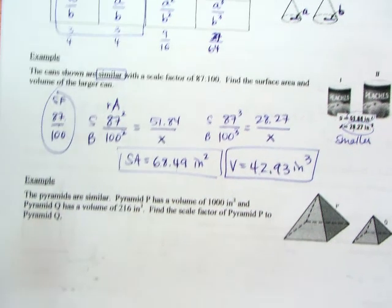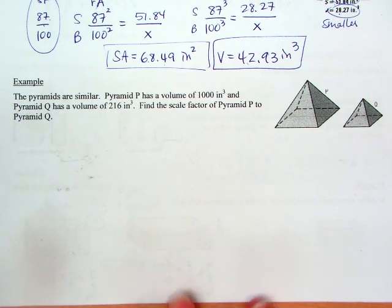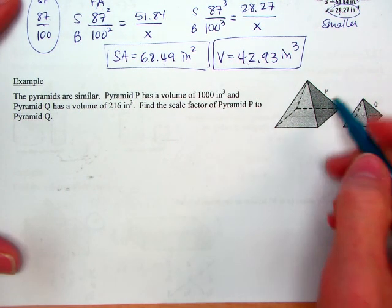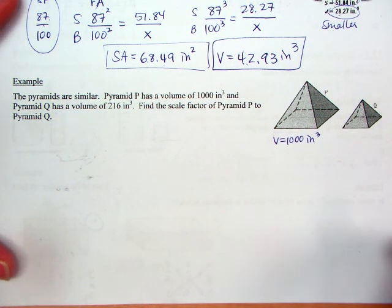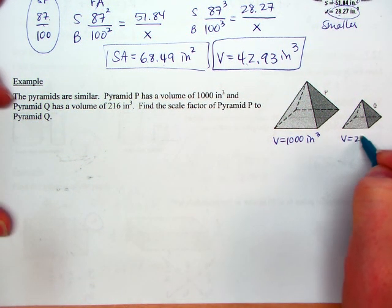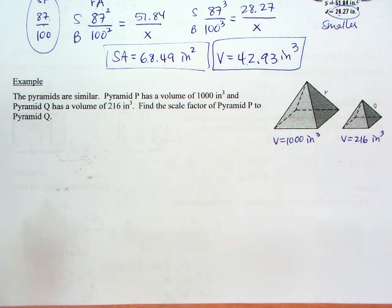One more example. Still doing this similar stuff. The pyramids are similar. Pyramid P has a volume of 1,000 inches cubed and pyramid Q has a volume of 216 inches cubed. And they want us to find the scale factor.